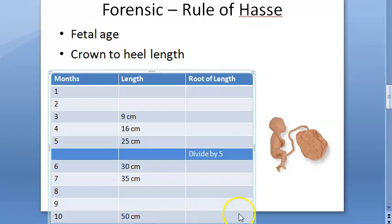You can use the osteometric board to measure the crown-to-heel length, since the fetus is available and can be stretched on a flat surface. This is the Rule of Haase — given the length, you should be able to tell the age of the fetus. The medico-legal importance is that you can estimate fetal age in cases of criminal abortion or female foeticide.